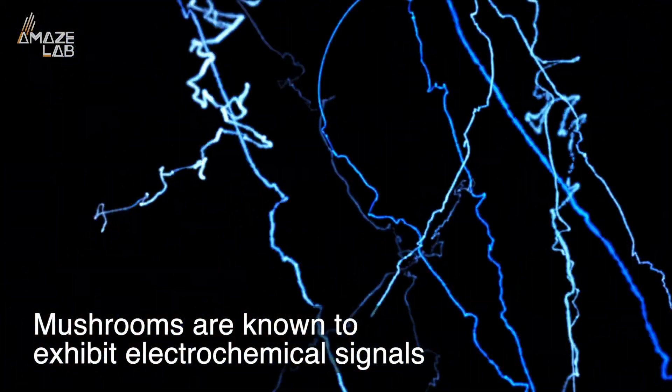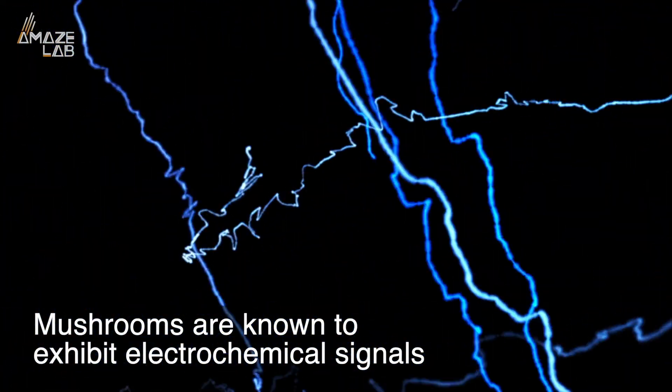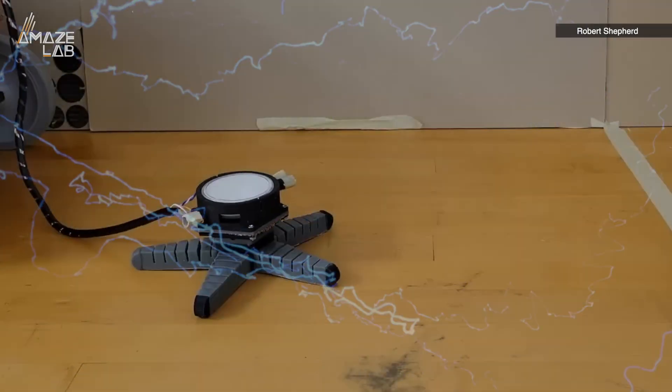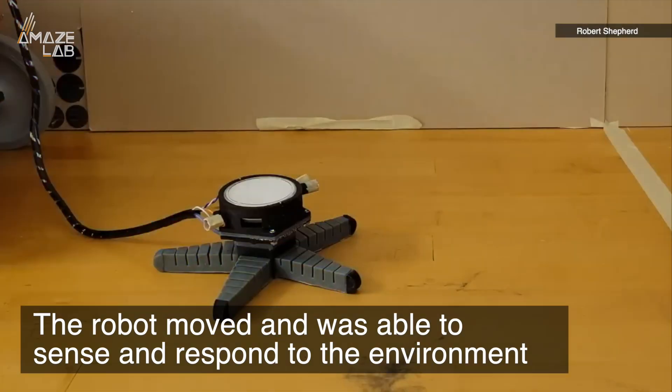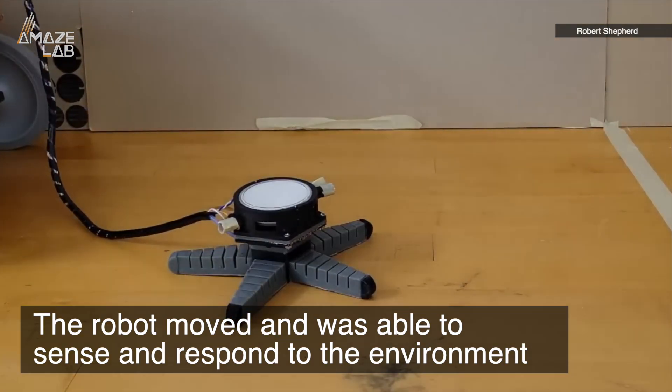Mushrooms are known to exhibit electrochemical signals, so the investigators wondered what would happen if they gave a king oyster mushroom the controls to a robot. And this is what happened. The robot moved and was able to sense and respond to the environment.